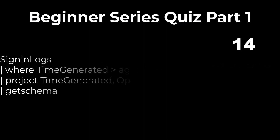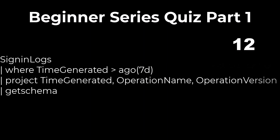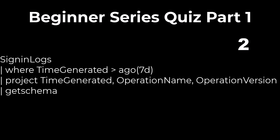Problem 15: The following query will produce records in the last week from the three fields listed. GetSchema is used to understand the data type of each field — it will not produce records for the last seven days. The answer is false.